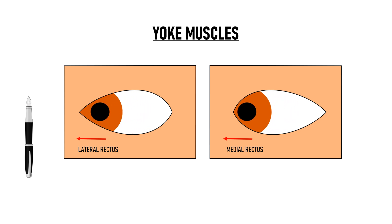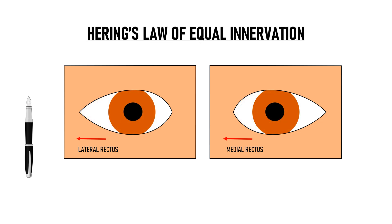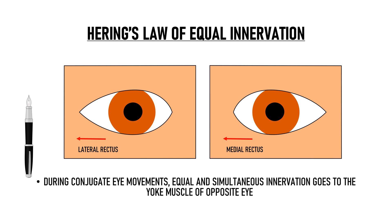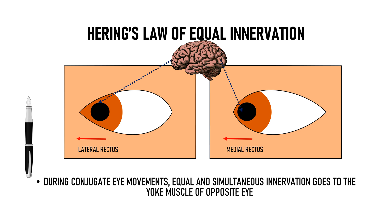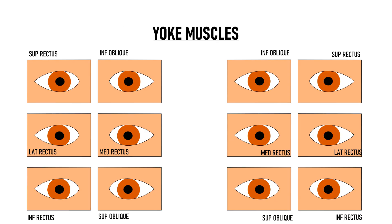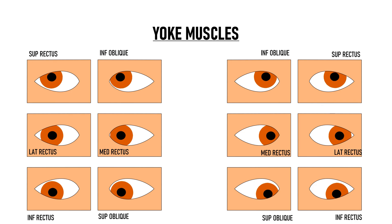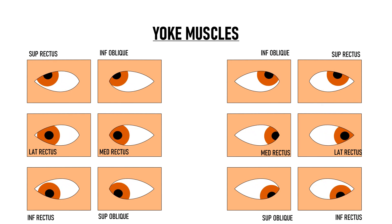This conjugate movement of the eyes can be explained by Herring's Law of Equal Innervation. Herring's Law of Equal Innervation states that during conjugate eye movements, equal and simultaneous innervation goes to the yoke muscle of the opposite eye — meaning it receives the same amount of stimulation at the same time. So, when the brain sends stimulus to the right lateral rectus to contract, its yoke muscle — the left medial rectus — also receives the same amount of stimulation at the same time, and thus moves the left eye nasally by the same amount. Yoke muscles are also known as agonists or synergists, and this is true for all directions of gaze.